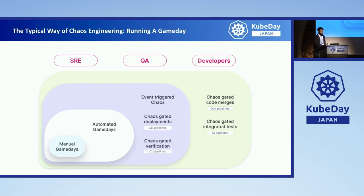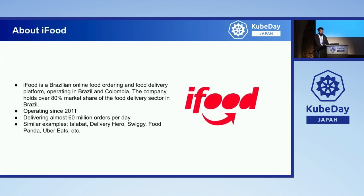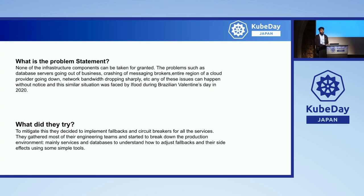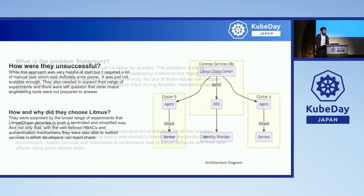Let's check out the iFood story — the case study. iFood is a food delivery app, similar to Uber Eats in Japan. iFood is a popular delivery app in Brazil, taking 60 million orders per day. The problem statement was that they were moving to a microservices architecture and saw servers going down — their messaging brokers were crashing. The main issue arose on a Brazilian Valentine's Day in 2020 when they saw a major outage. They started with circuit breakers and fallbacks, but realized this was a larger problem requiring a more systematic approach, and that's where they moved to chaos engineering.